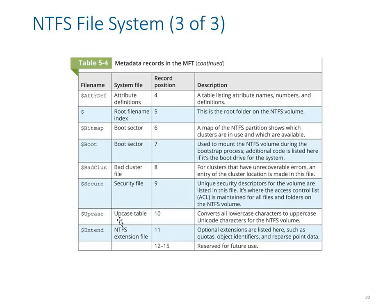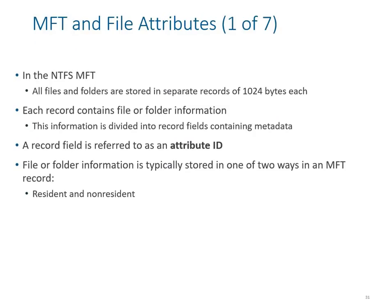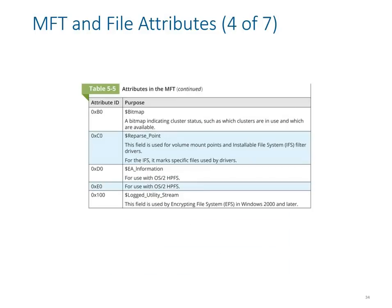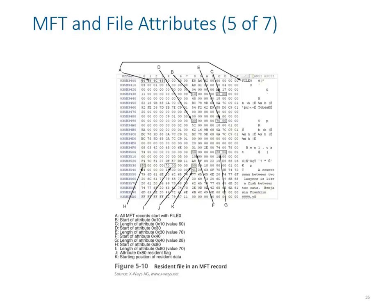Looking at MFT file attributes: all files and folders are stored in separate records, each containing a folder information attribute ID and related data. Attribute IDs appear at 0x70 and 0x80 for data resident files. By examining these codes you can compare them with the forensic analysis of the hard drive — seeing hexadecimal data and determining what it actually represents.